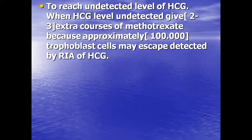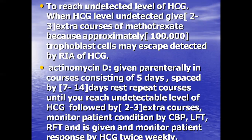The goal is to reach an undetectable level of HCG. When HCG becomes undetectable, give two to three extra courses of methotrexate. This is because approximately 100,000 trophoblast cells may escape detection by radioimmunoassay of HCG. The other drug, actinomycin D, is given in courses of five days spaced by seven to fourteen days rest.